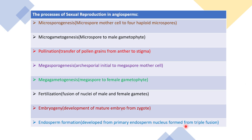Sexual reproduction in angiosperms takes place through the following processes. First is microsporogenesis, in which the microspore mother cell gives rise to four haploid microspores. Genesis means generation, so this term refers to the generation of microspores. The next term is microgametogenesis, in which the male gamete is formed from the microspore.